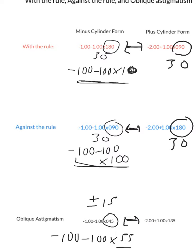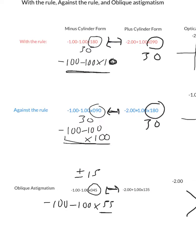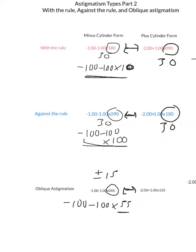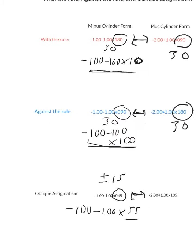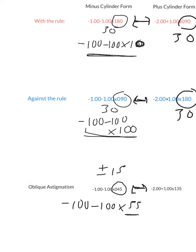With oblique astigmatism in plus cylinder form, it's plus or minus 15 degrees from 135. Hopefully that helps.